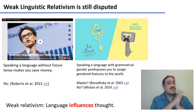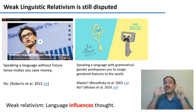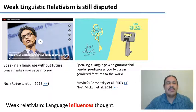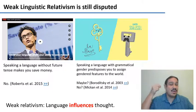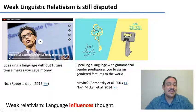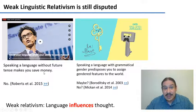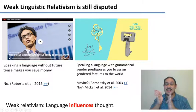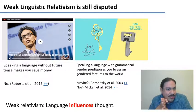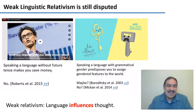So strong relativism is false — the idea that your thoughts are entirely determined by your language. How about weak relativism, where your language merely influences your thoughts? The jury's still out. For example, there are people who say that speaking a language without a future tense, like Mandarin Chinese, will make you save money, because the lack of future tense morphemes makes you feel like the present and future are a single unit. Cool story — it's false. I'll tell you more in a moment.